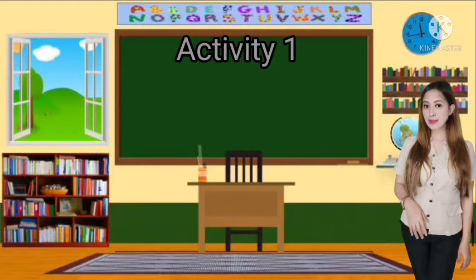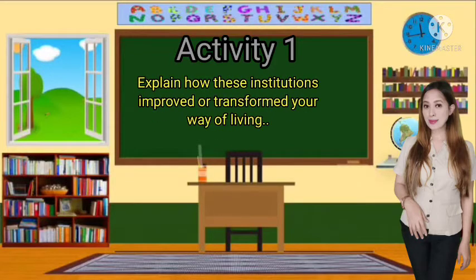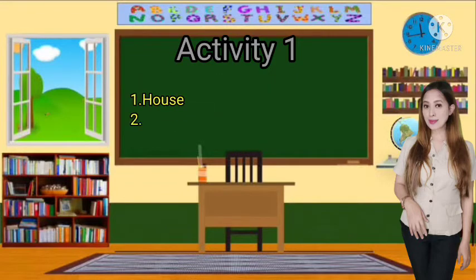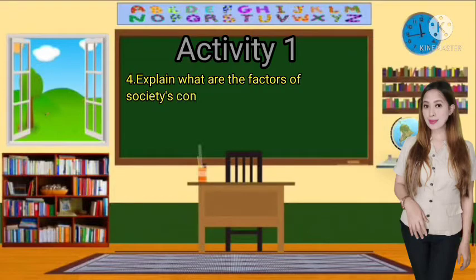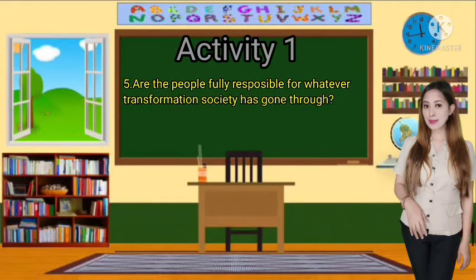You are going to do Activity 1. The directions say: Explain how these institutions have transformed and improved your way of living, in narrative form. Number 1: How do you think your house or family transformed or improved your way of living? Number 2: Your school. Number 3: Your institutions or government sectors. Number 4: Explain the possible factors of society's continuous transformation. And the last question: Are people fully responsible for whatever transformation societies have gone through? Why or why not?